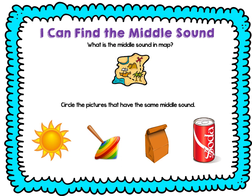Which pictures have that same middle sound? I'm going to name each picture for you: sun, top, bag, can. Which one has the same middle sound as map? Let's try it. Ready? Sun — S — A — N. No, that had A. Top — T — A — P. No, that had A. Bag — B — A — G. Oh, that had A — just like in map. Were those the two that you were thinking? Great job.